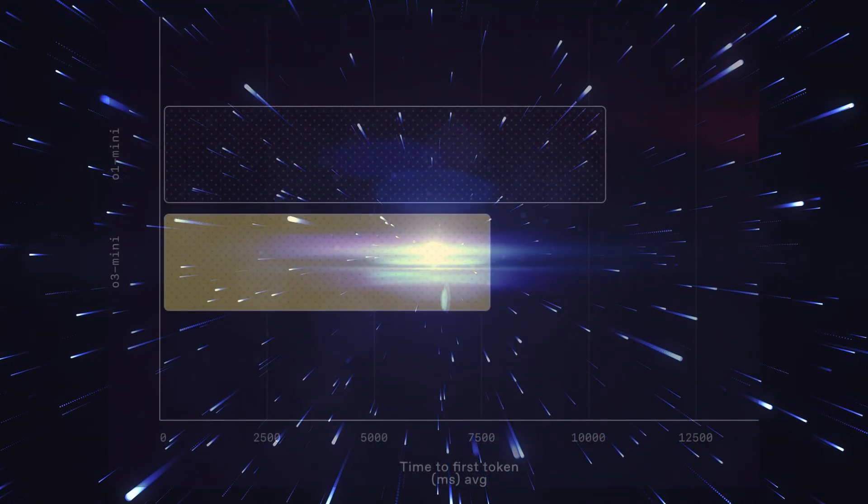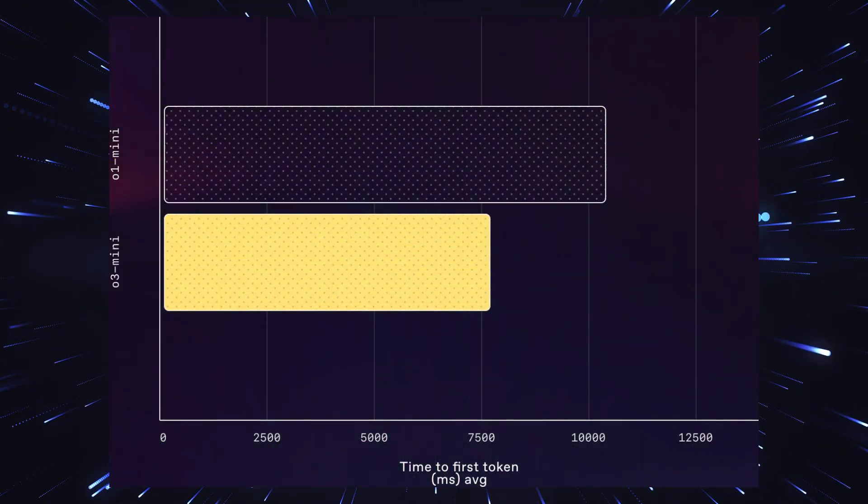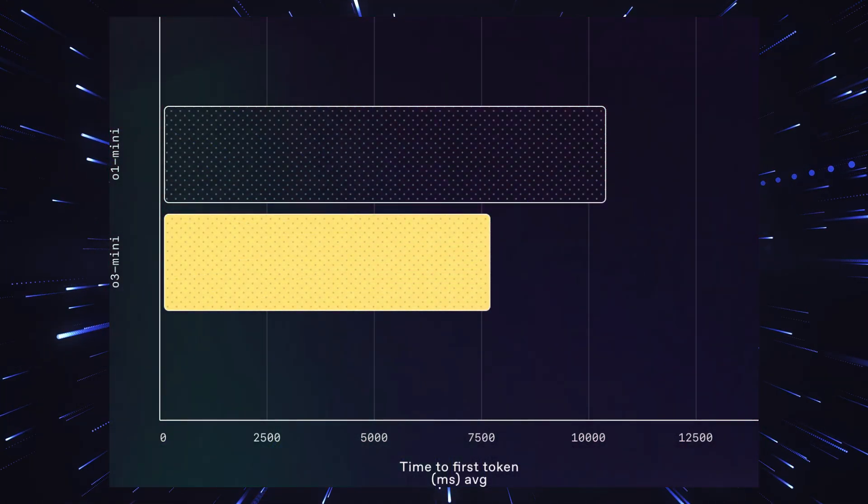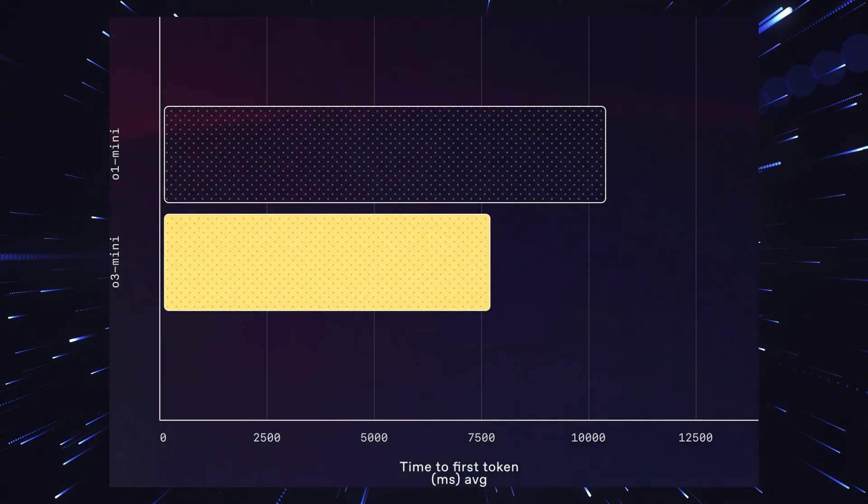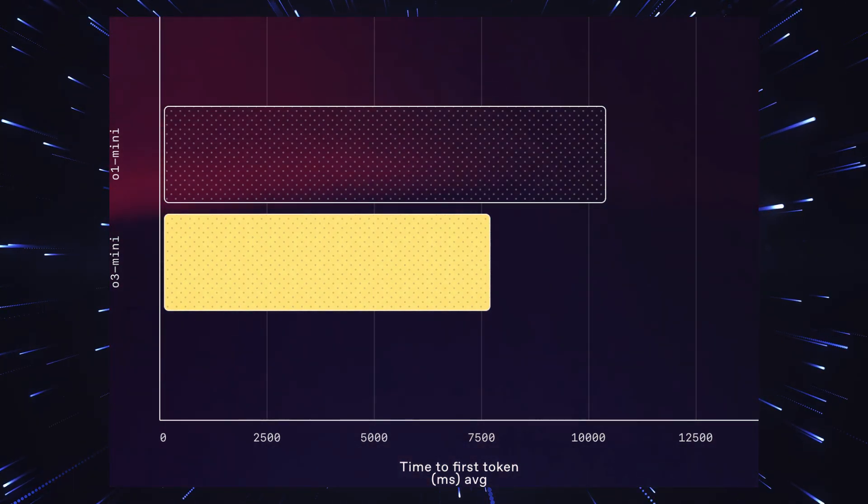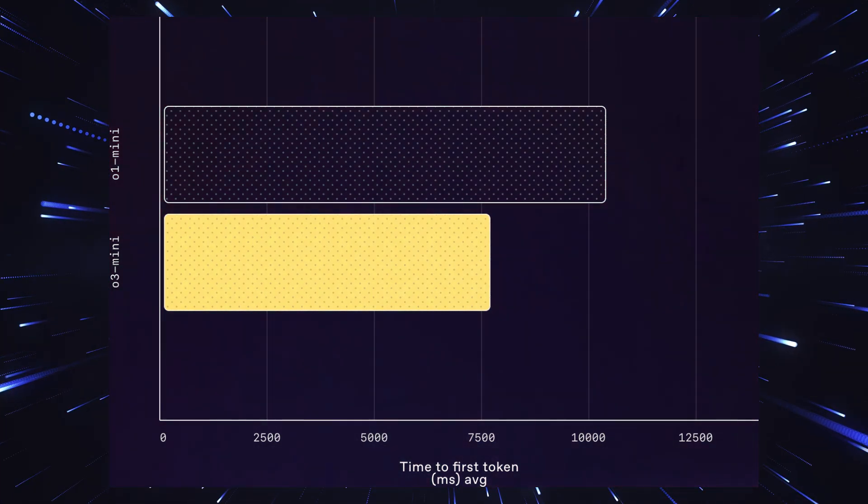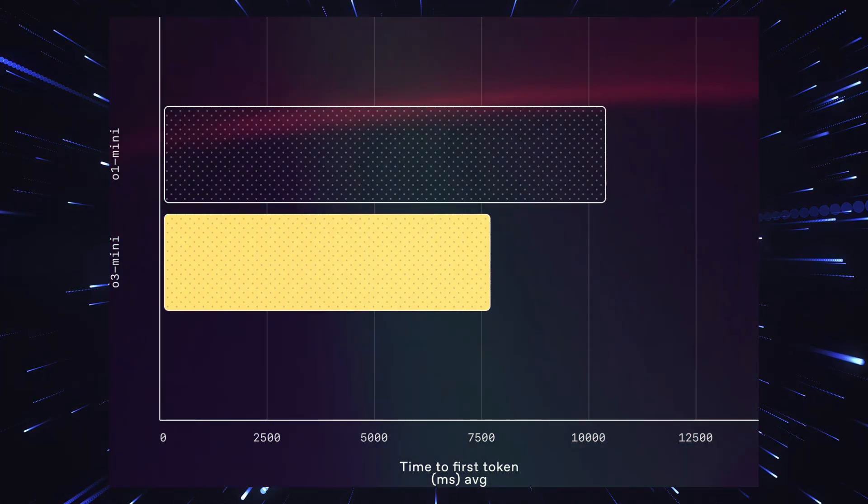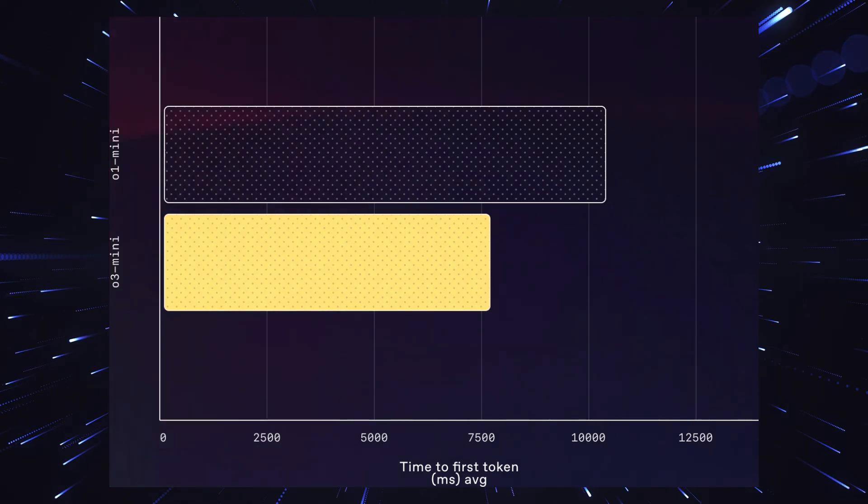But what's really amazing is how fast O3 Mini works. While other models often need several minutes for such tasks, O3 Mini delivers the results in seconds and with a quality that significantly exceeds previous standards. In the benchmarks, O3 Mini even beats the previous flagship O1 in many areas. The results are particularly impressive in the coding area, where O3 Mini High achieves an ELO rating that eclipses all previous models.